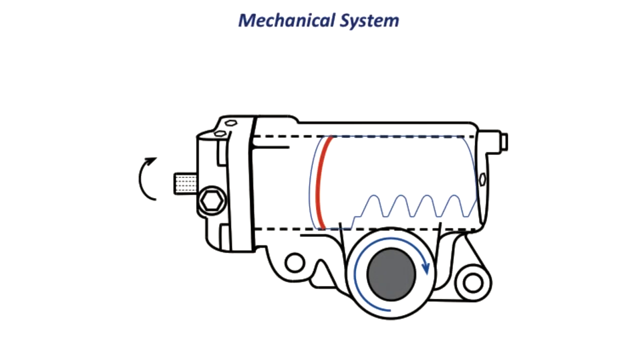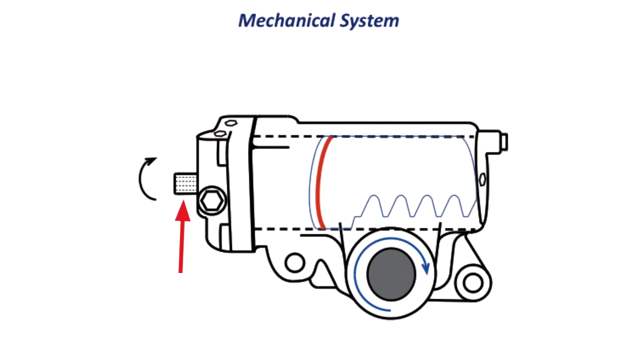A steering gear is really made up of two systems, a mechanical system and a hydraulic system. The mechanical system of the gear gets input or rotation from the steering wheel. As the input shaft turns in either direction, it pushes the rack piston linearly inside the cylinder bore of the gear housing.